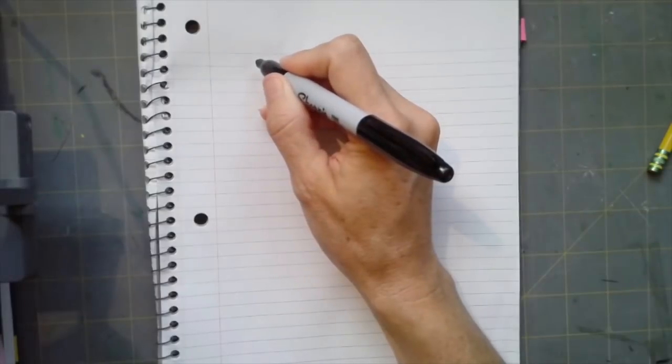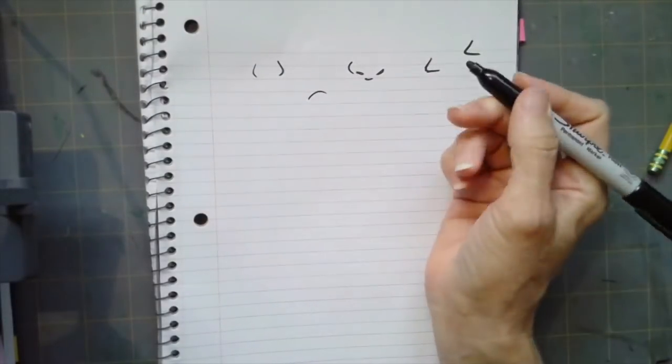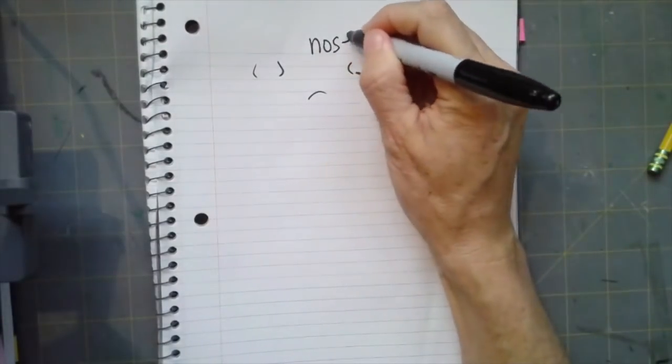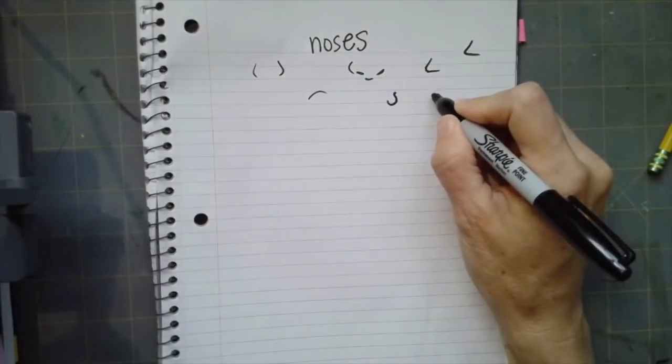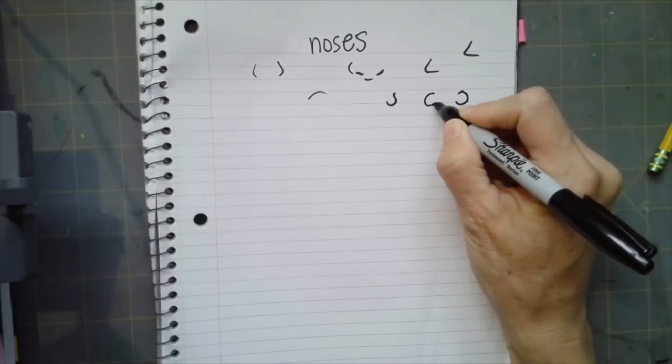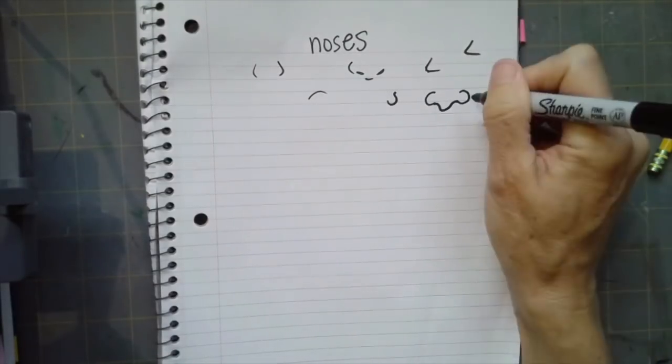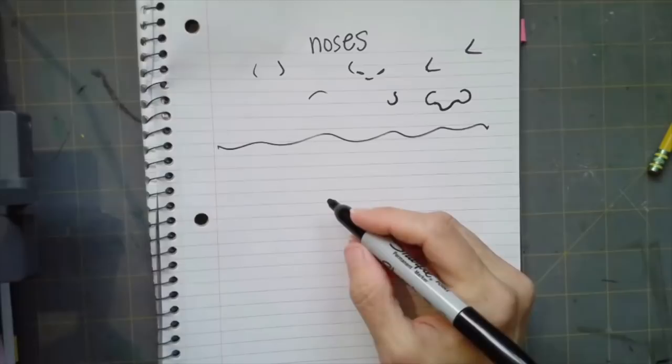Now for noses. My motto with noses is keep it simple. You can draw the two little lines curving out for your nostril. You can draw one of those and just little upside down question mark, a little sideways triangle, or just a little like curved mountain shape. If you get into too much detail with your nose, it's going to start to look like a pig.